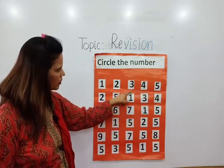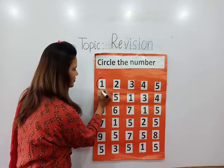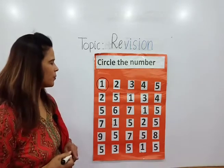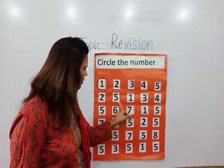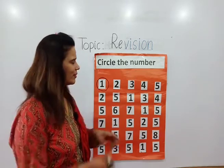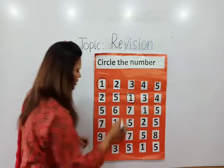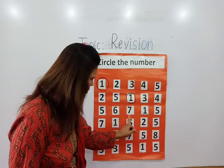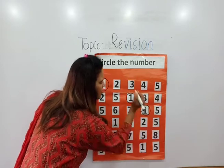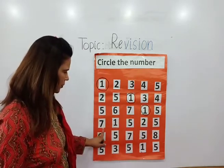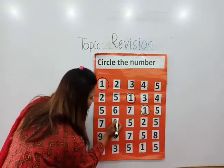Where is number one? This is number one — we will circle it. Now the second line, we will find out number one and circle it. This is number one. Now you will circle it. Very good! Now here, where is number one? This is number one — okay, now circle it.